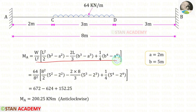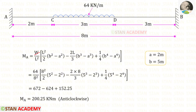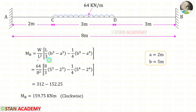Now let us use this formula. In this formula, A is the distance between the left support and the starting point of the UDL, which is 2. So A is 2. B is the distance from the left end to the end point of the UDL, which is 5 meters. So B is 5. W is 64 and L is 8. For MA we will get 200.25 kilonewton meter. Using this formula we can find the fixed end moment at point B; for MB we will get 159.75 kilonewton meter.